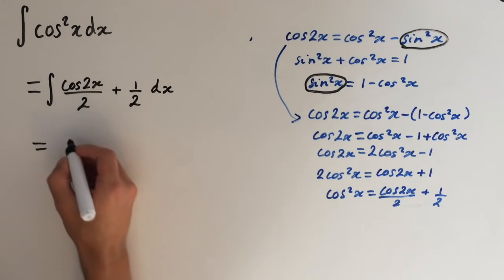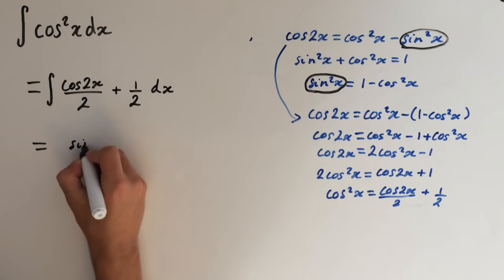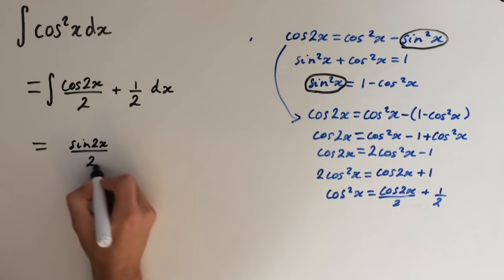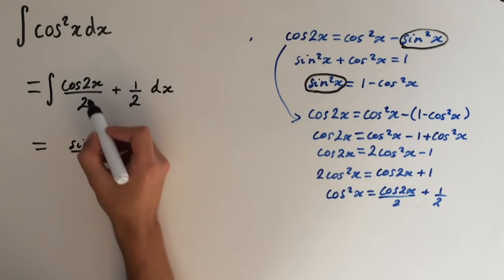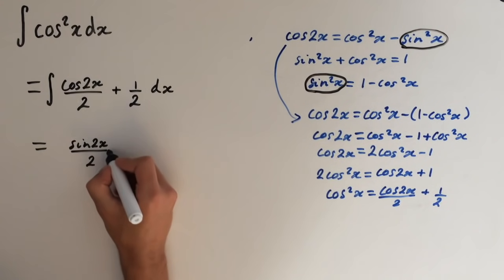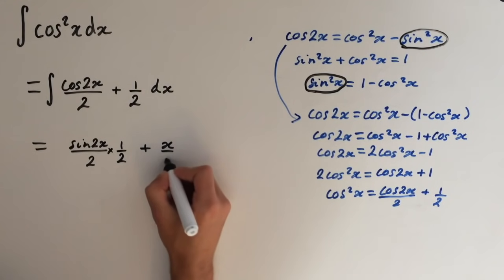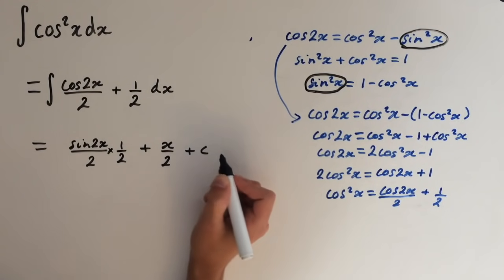The integral of cosine 2x is sine of 2x. And this will be over 2, but just like the sine squared integral, we have to compensate for the 2x here. So we have to use the reverse chain rule and multiply it by 1 half. And the integral of 1 half is just x over 2 plus c.